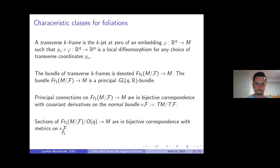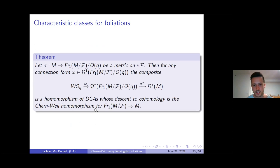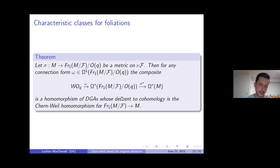Just as with the bundle of metrics, one-frames modulo O(Q) is a bundle of transverse metrics — a bundle of metrics on the normal bundle ν_F. Putting all this together, by essentially an application of what we've already discussed, we get a Chern-Weil homomorphism: a map from W(O_Q) — the algebra of invariant polynomials — to differential forms on the bundle of transverse metrics. When you choose a metric on the normal bundle, this pulls back to differential forms on the manifold. This is a Chern-Weil homomorphism for the leaf space of the foliation.